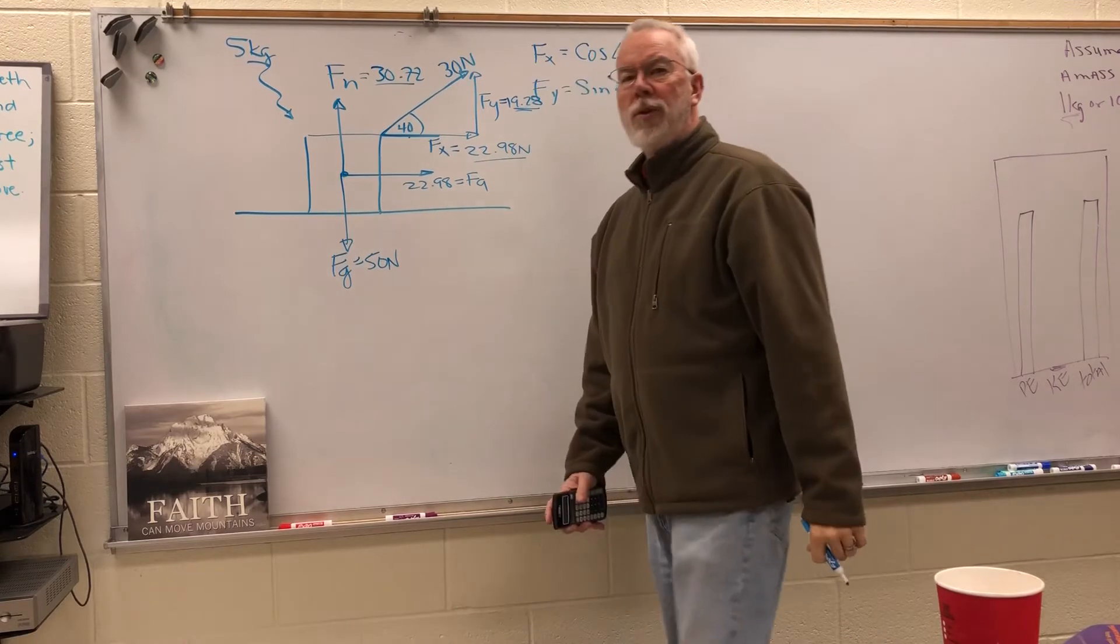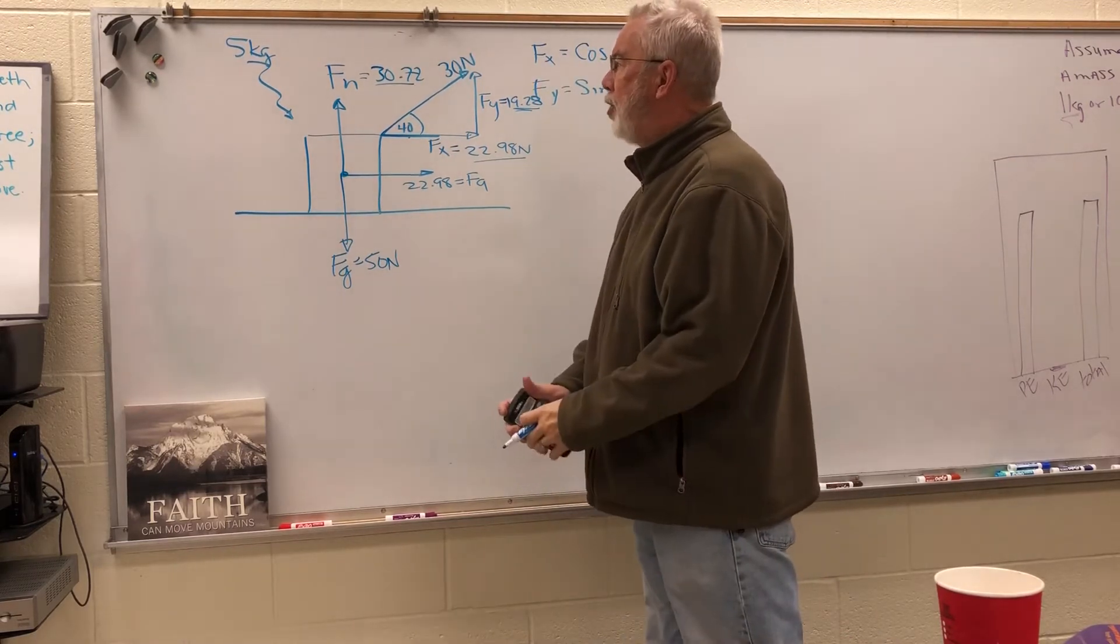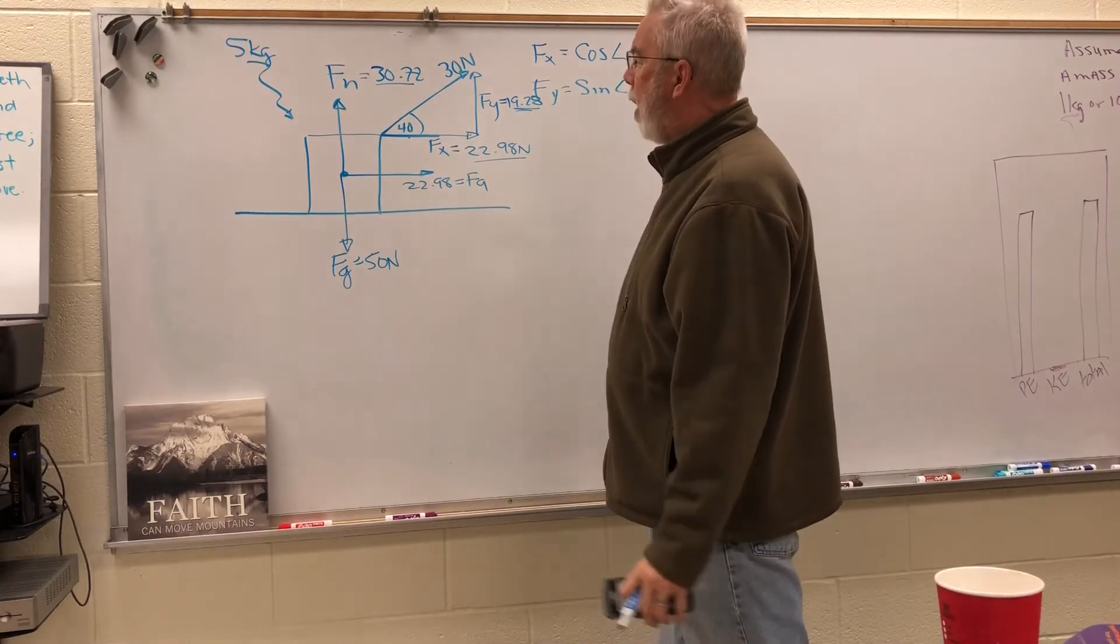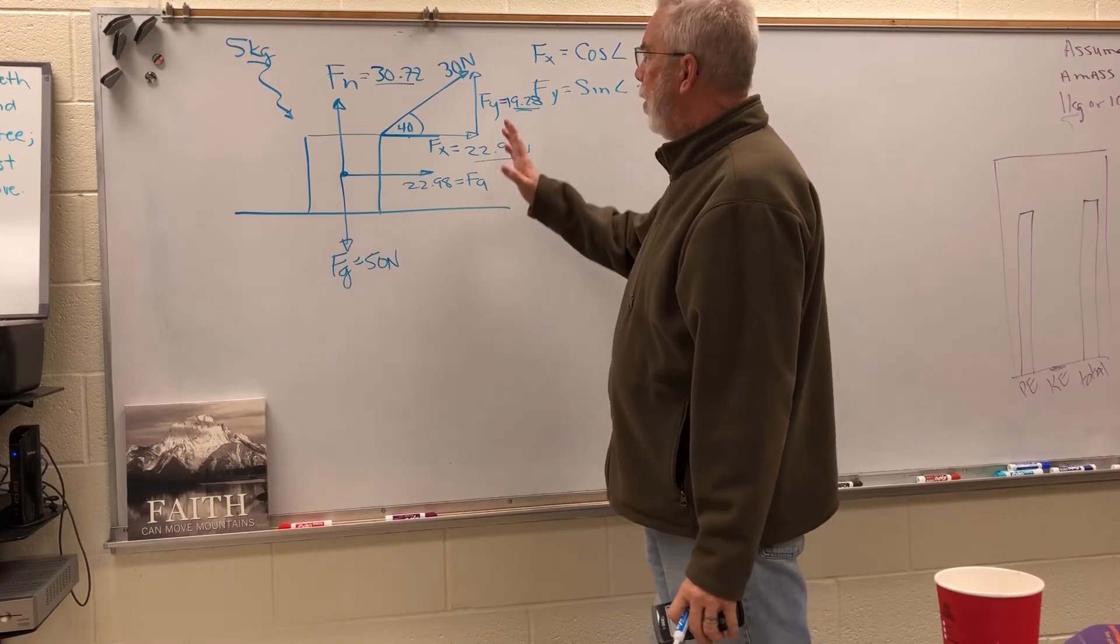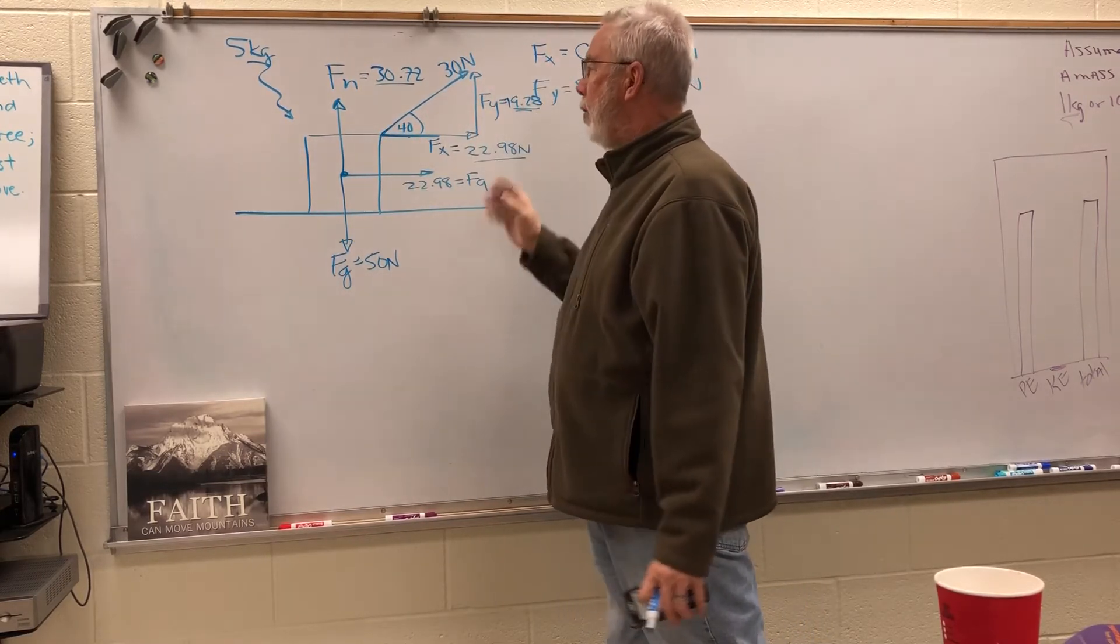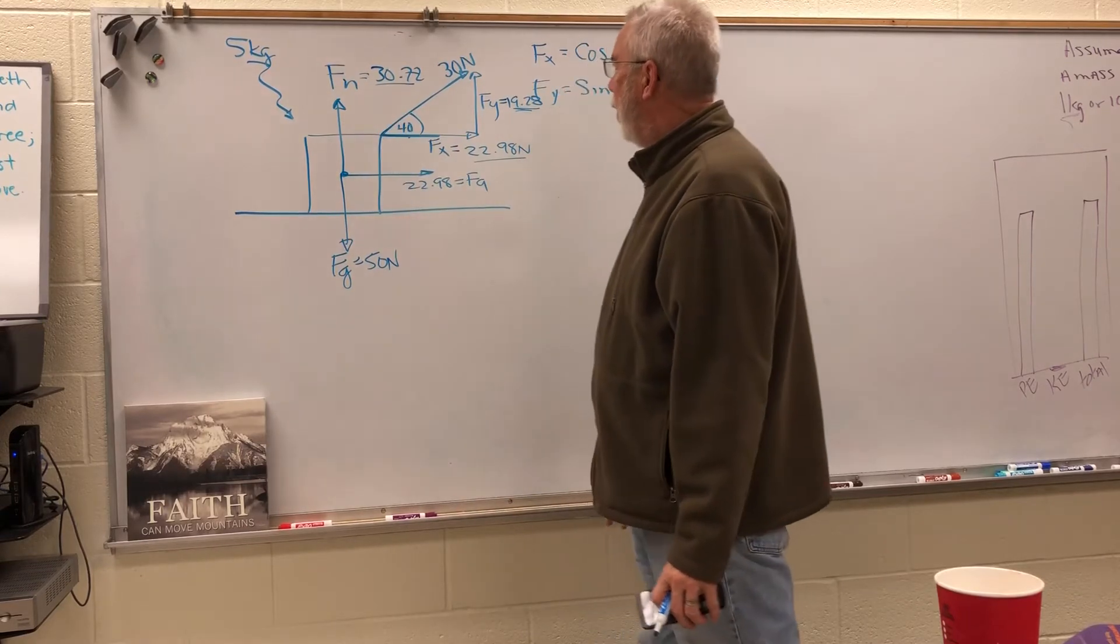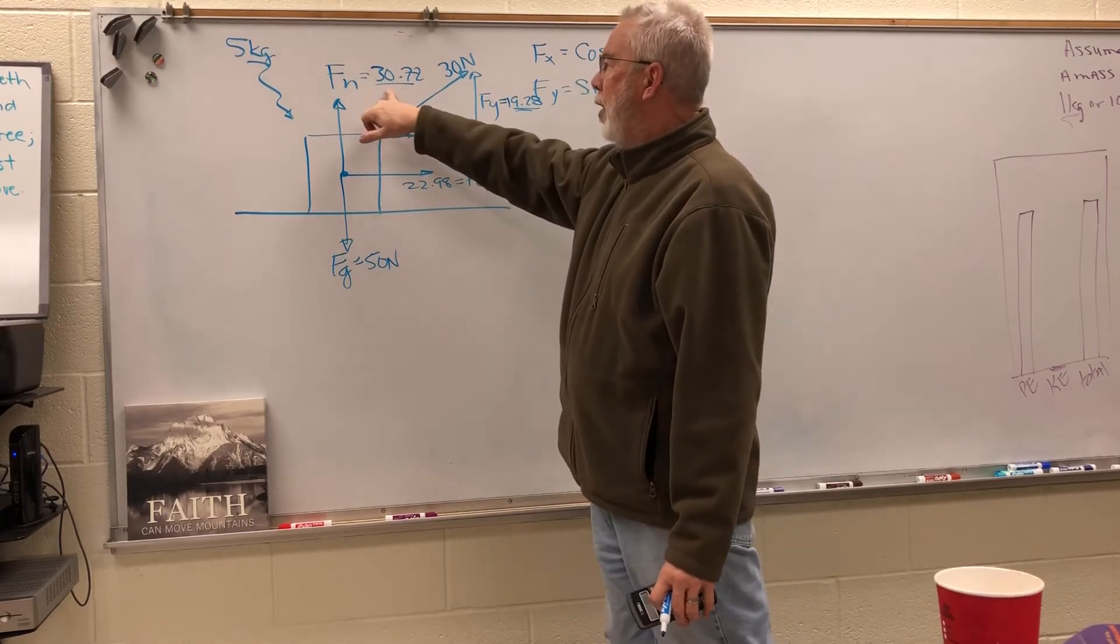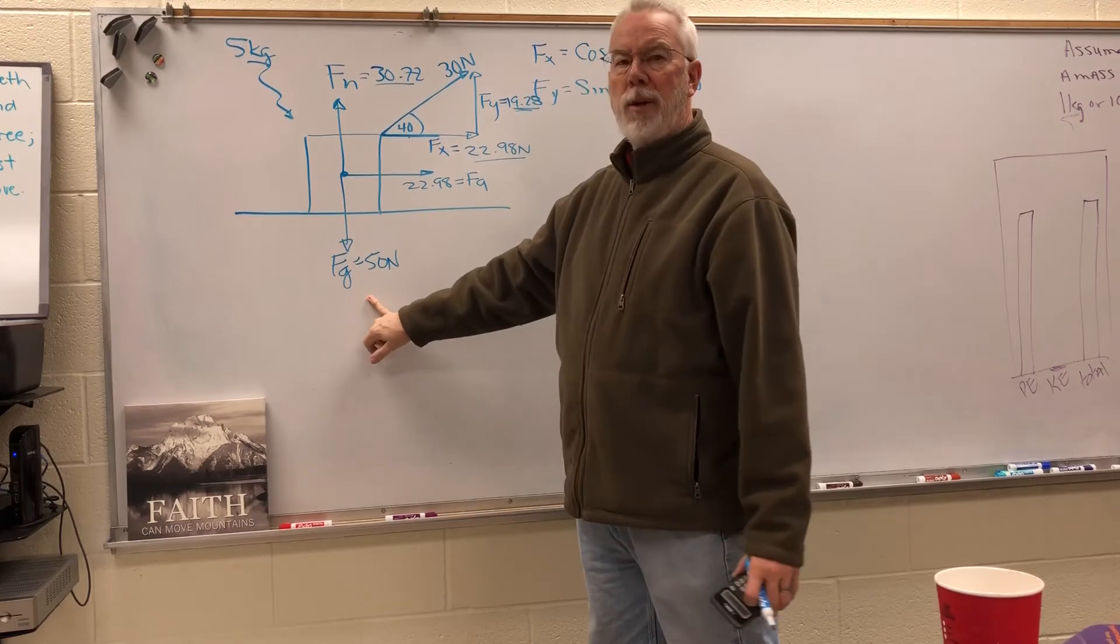So 50 minus 19.28 equals 30.72. So 30.72 is going to be the force for the normal force. Generally, if you look at this problem, you can see that when we're lifting or we're pulling up and to the right or we're pulling up and to the left, the normal force is going to be smaller than the weight of the box.